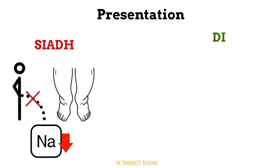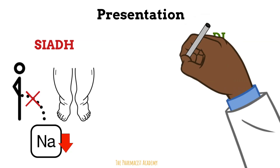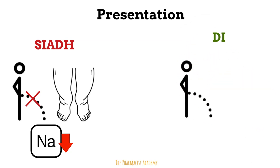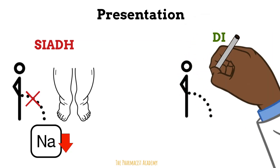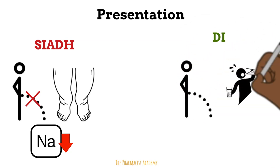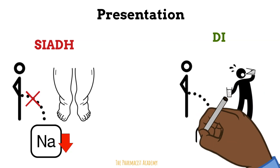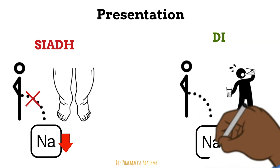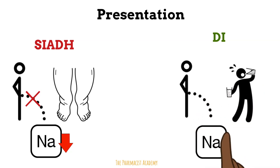Now for diabetes insipidus, the vasopressin is not working that well, so the efficacy of it is also going to decrease. Therefore you're going to be urinating a lot. You're going to be very thirsty, parched. And then the sodium concentration in the blood is also going to increase because the blood volume has technically reduced.